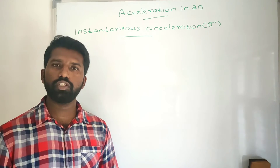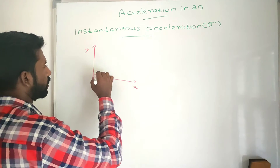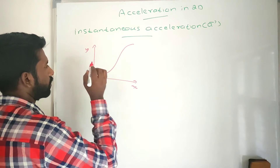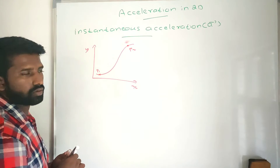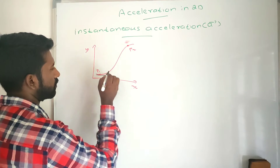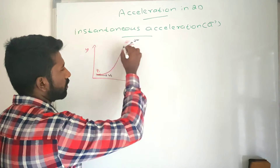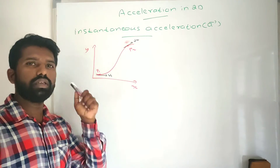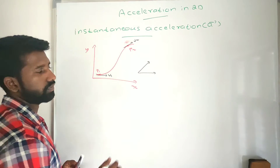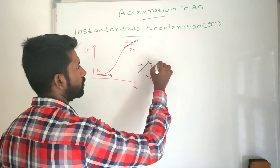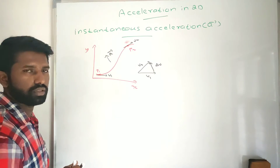Consider a body moving in a curved path in a plane with X and Y axes. Point P1 is at instant T1 and point P2 is at instant T2. The velocity at each point is the tangent to the path. Here the time interval is larger, so we consider average acceleration direction, which is the same as the change in velocity direction — found using the triangular law from V1 and V2.